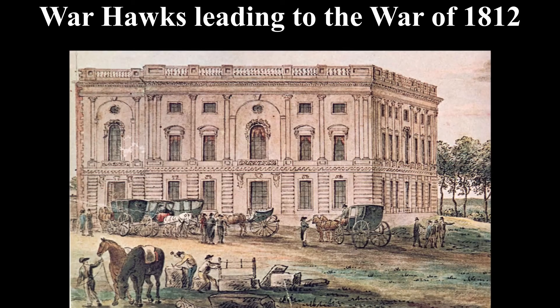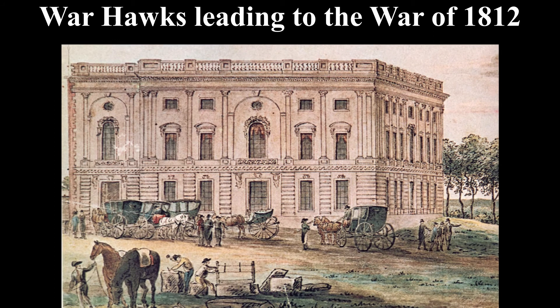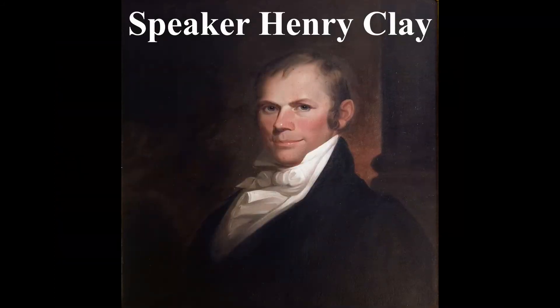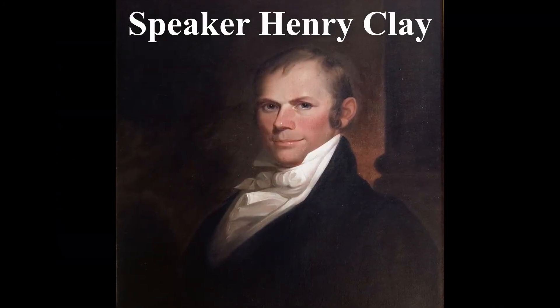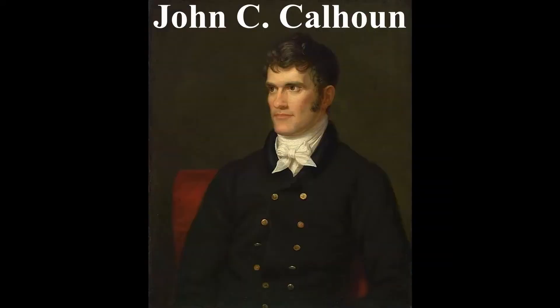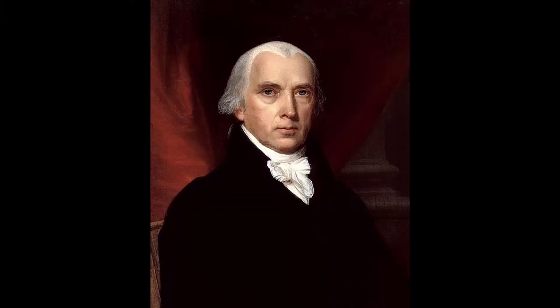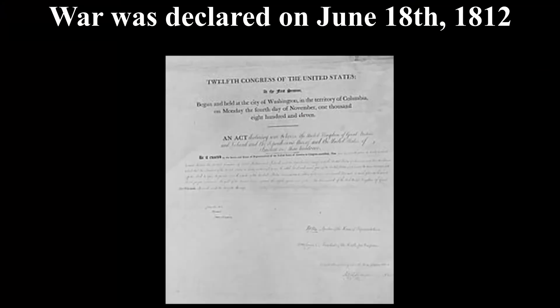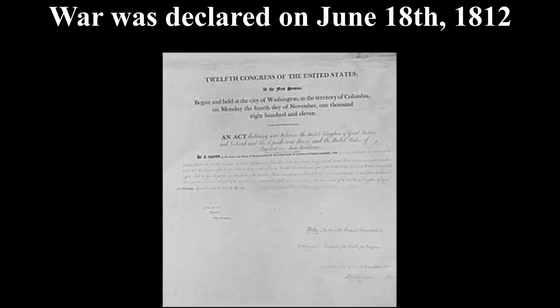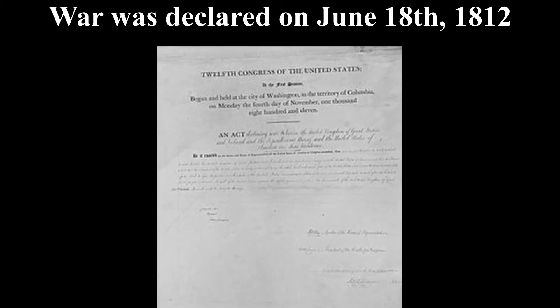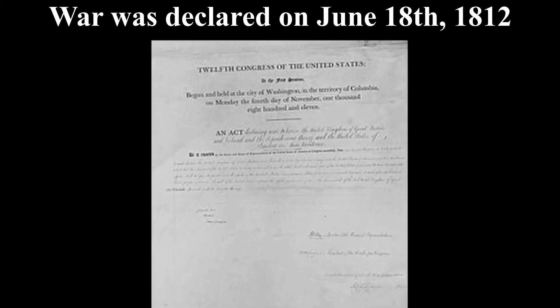During this time there was a new faction in America called the Warhawks, led by people like House Speaker from Kentucky, Henry Clay, and John C. Calhoun, a representative from South Carolina. Both would be staunch leaders who fiercely wanted to go to war against Britain. At last they were able to convince James Madison, and he formally declared war against Britain on June 18th, 1812.